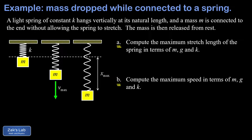Both parts are energy conservation problems. Starting with the maximum stretch length, we state energy conservation as E initial equals E final. In the initial state, the mass is released from rest at the top of its motion — no kinetic energy, only gravitational potential energy. In the final state, the mass is at its turning point, momentarily stationary, so again no kinetic energy — all energy is now spring potential energy from the stretching of the spring.